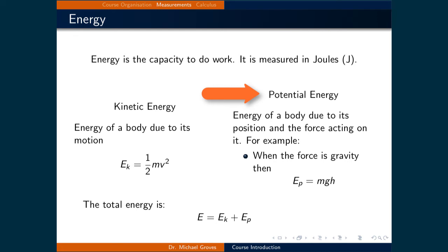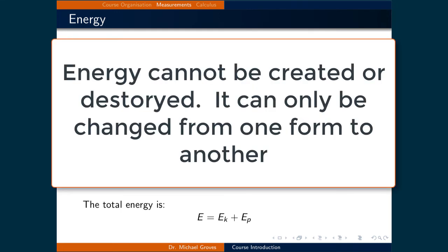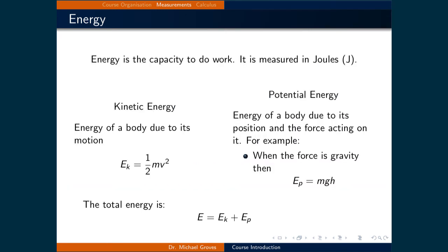For example, the box in our previous example gained 9.81 joules of potential energy because it was raised 1 meter. That means that it has 1 meter to fall while being pulled by gravity. Energy cannot be created or destroyed. It can only be changed from one form to another. By doing work to a system is one way to convert energy from one form to another.